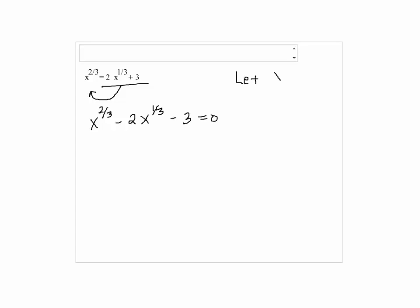Now, we're going to let y equals x to the one-third so that y squared is x to the two-third.